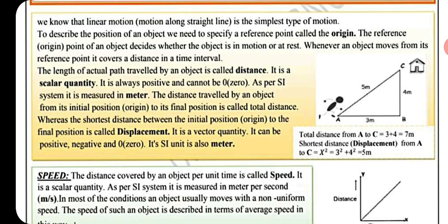Linear motion — motion along a straight line — is the simplest type of motion. To describe the position of an object, we need to specify a reference point called the origin. The reference point decides whether the object is in motion or at rest.